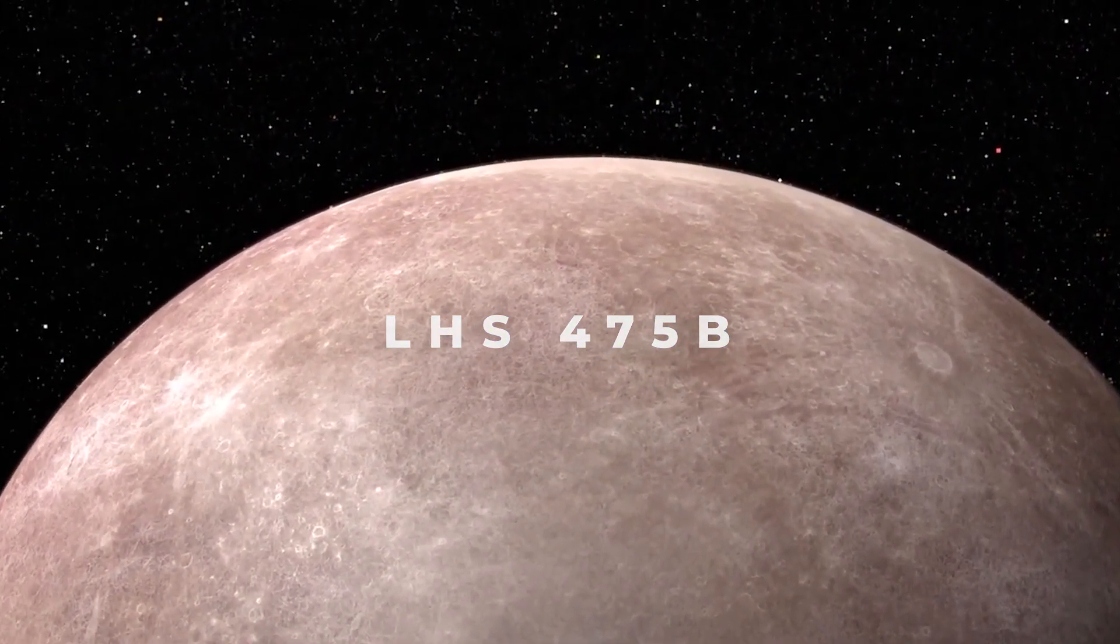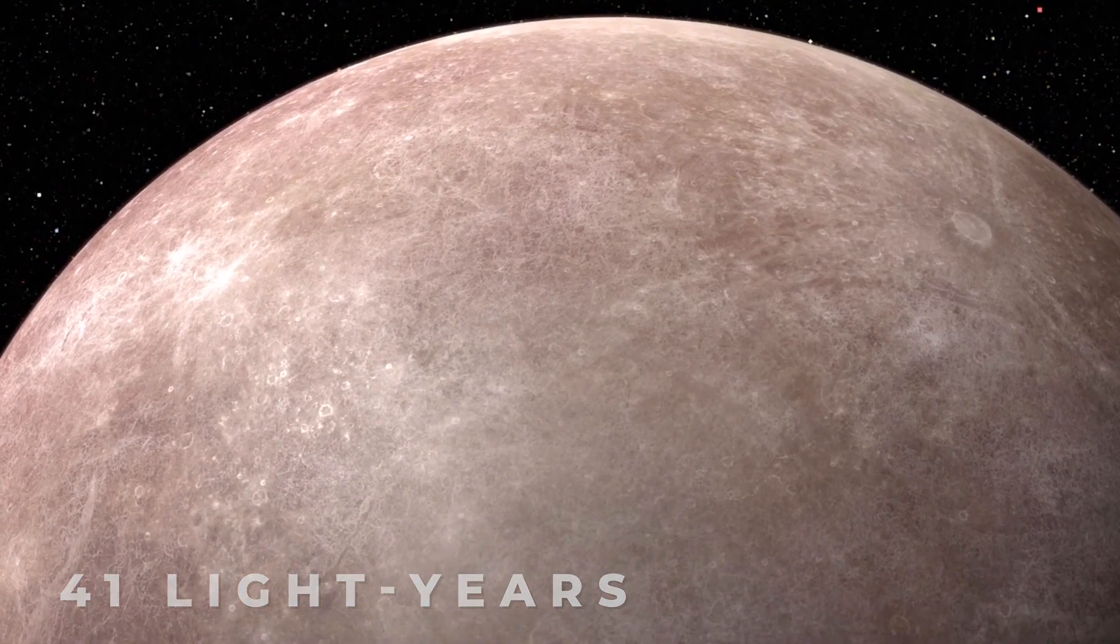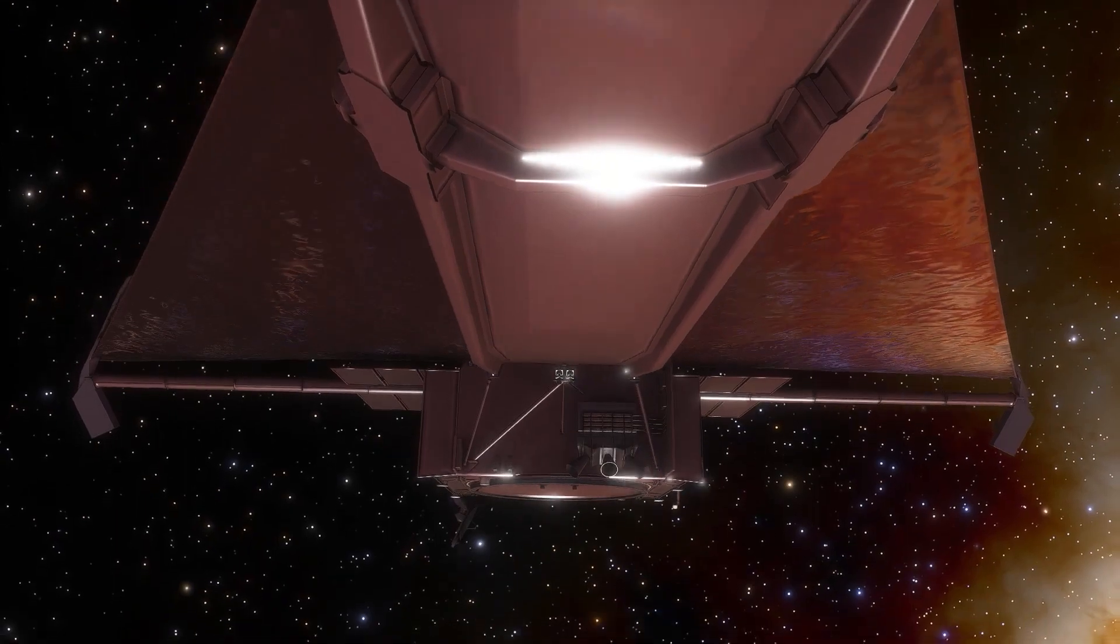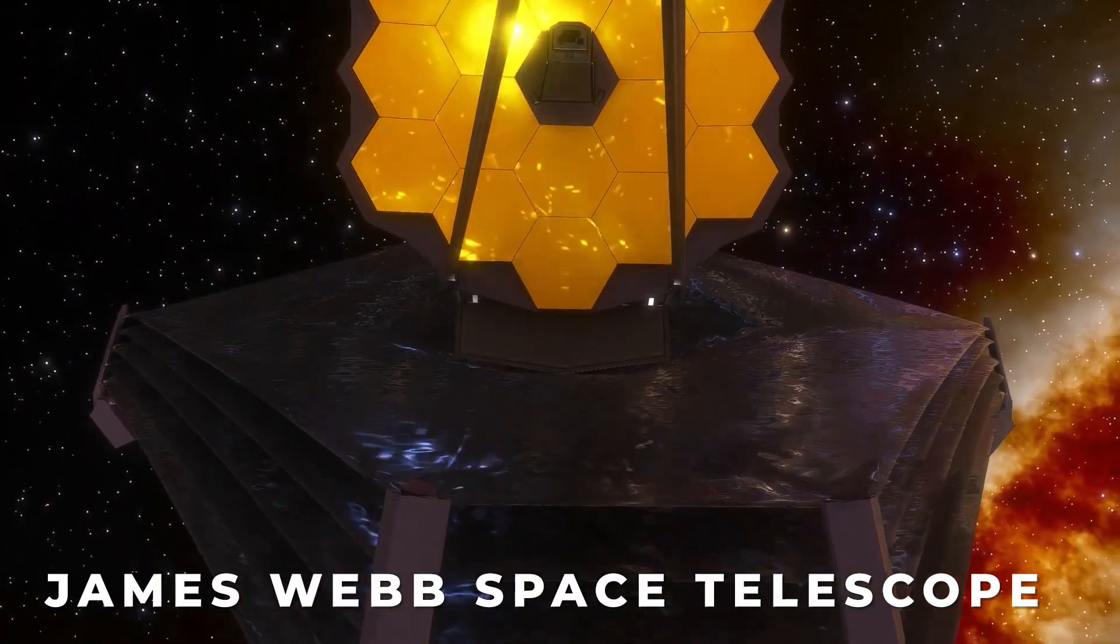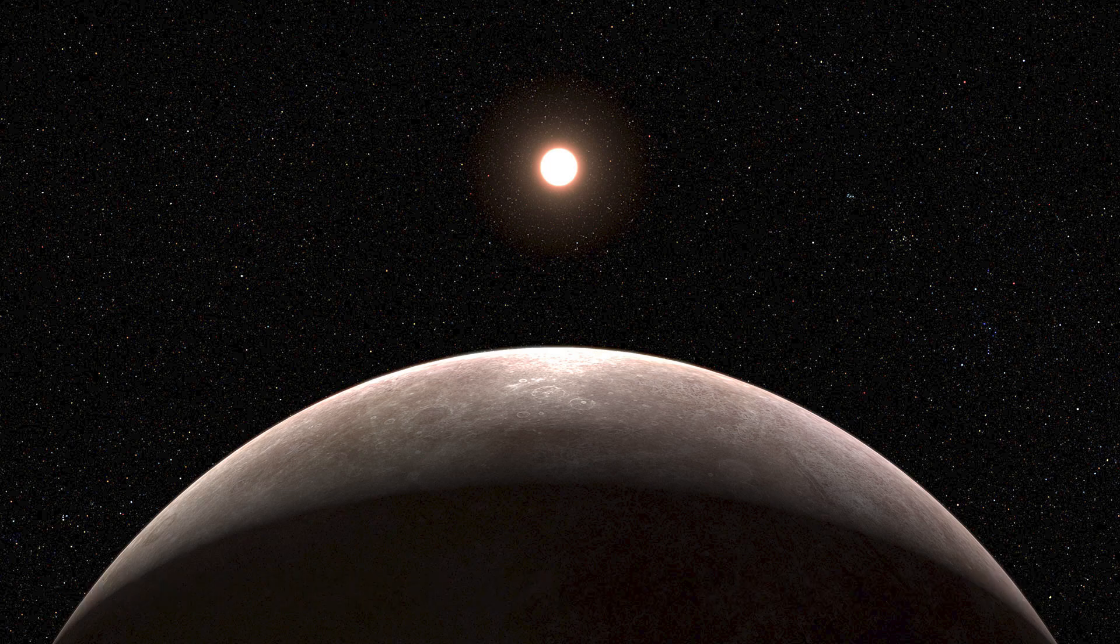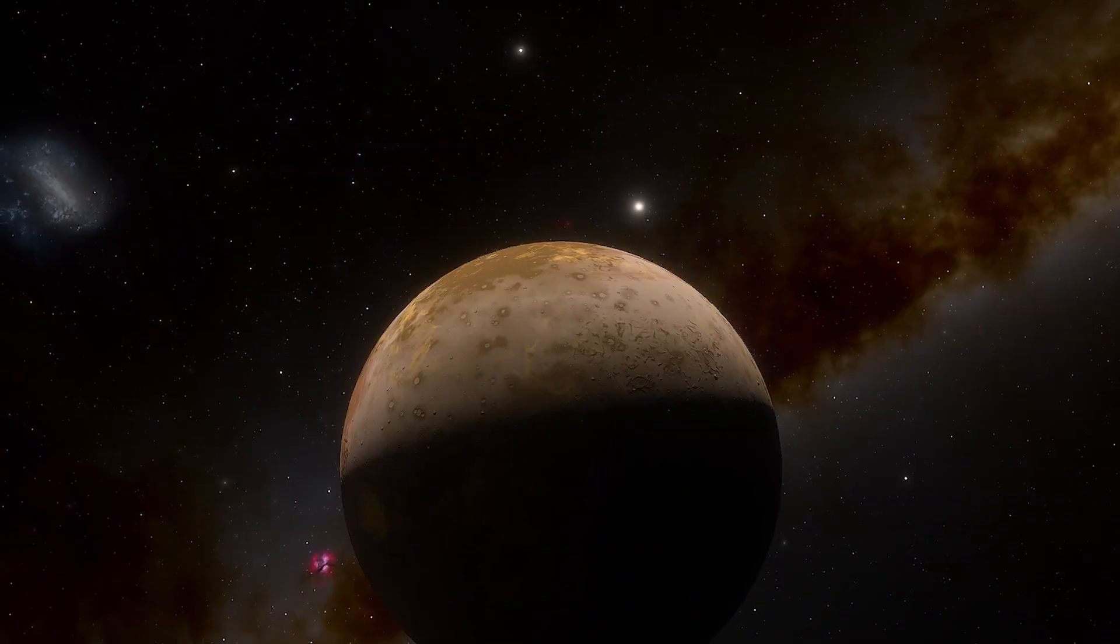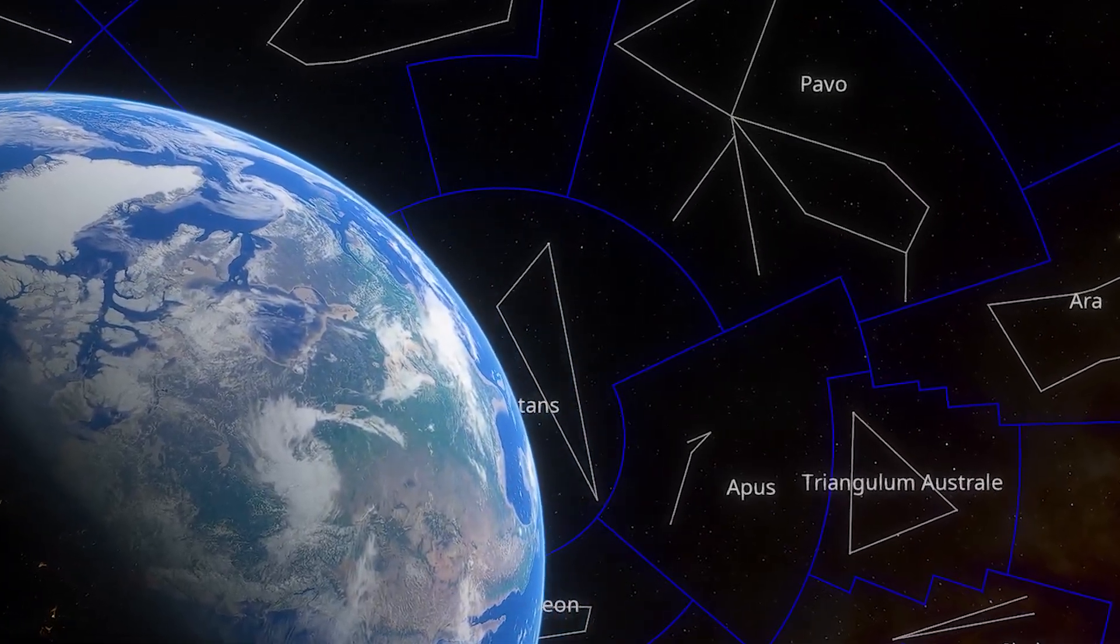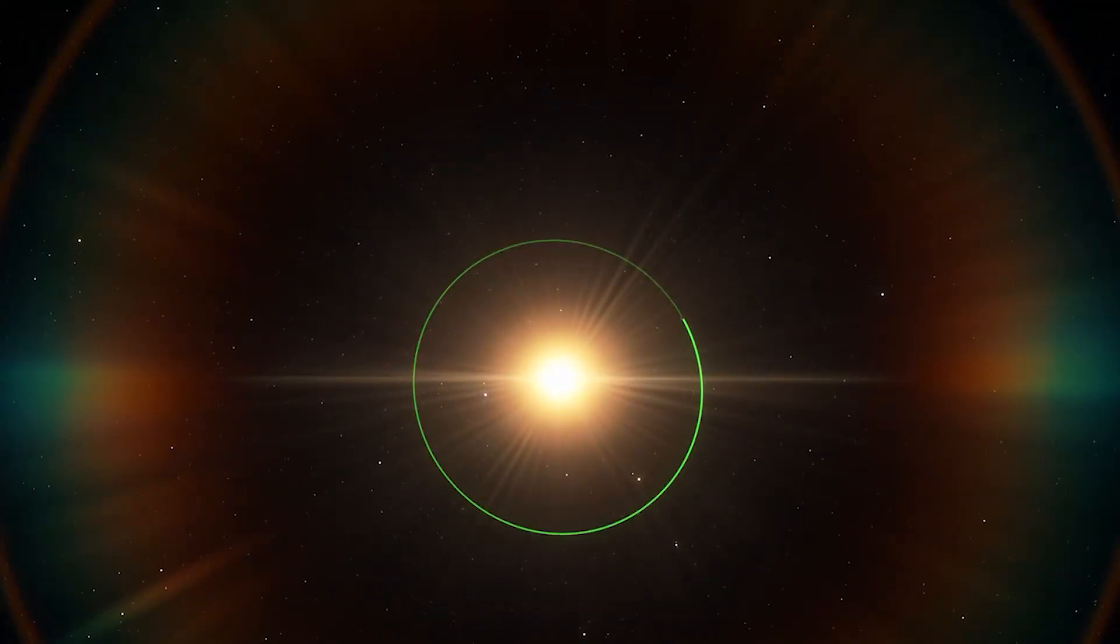LHS 475b, an Earth-sized planet just 41 light years away from Earth in the constellation Octans, has just been identified as the first rocky exoplanet discovered by the historic James Webb Space Telescope just over a year after its launch. LHS 475b is as hot as Venus. So yes, it might not be the planet that we can live on, but a discovery like this is big news.